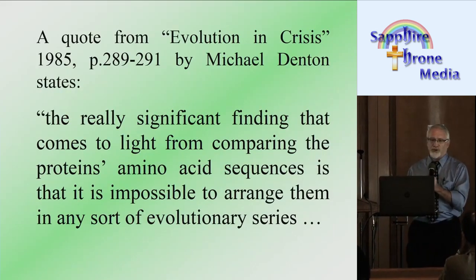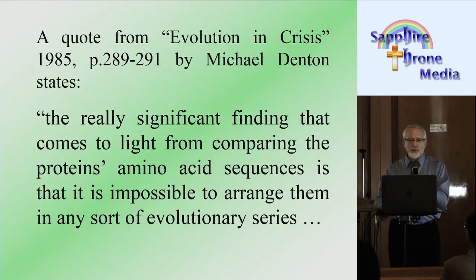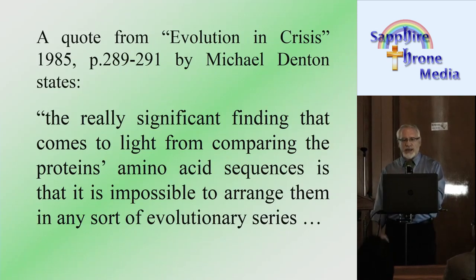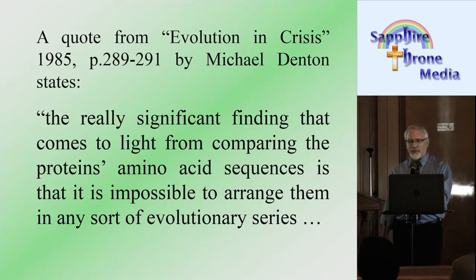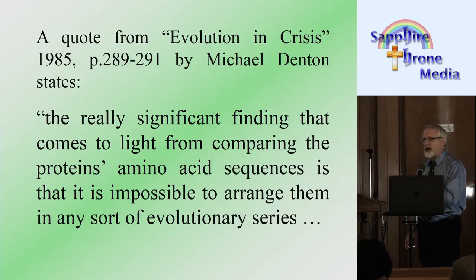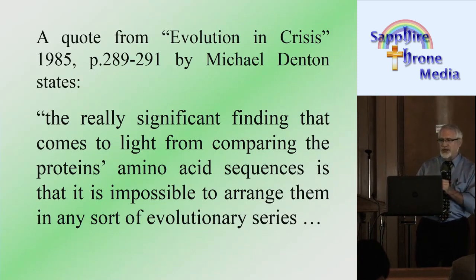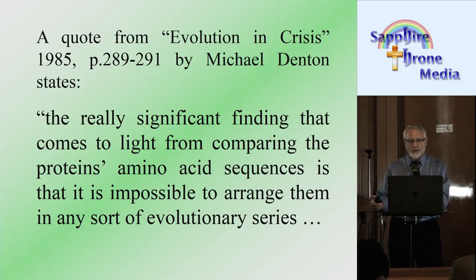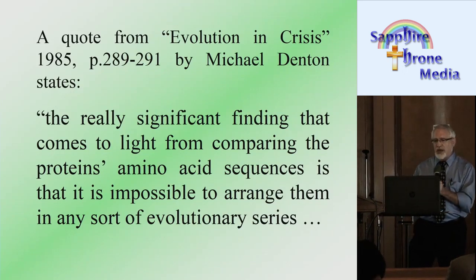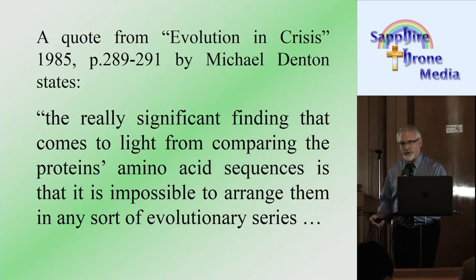A quote from Evolution in Crisis, pages 289 and 291, written in 1985 by Michael Denton, states: 'The really significant finding that comes to light from comparing the protein's amino acid sequences is that it is impossible to arrange them in any sort of evolutionary series.'